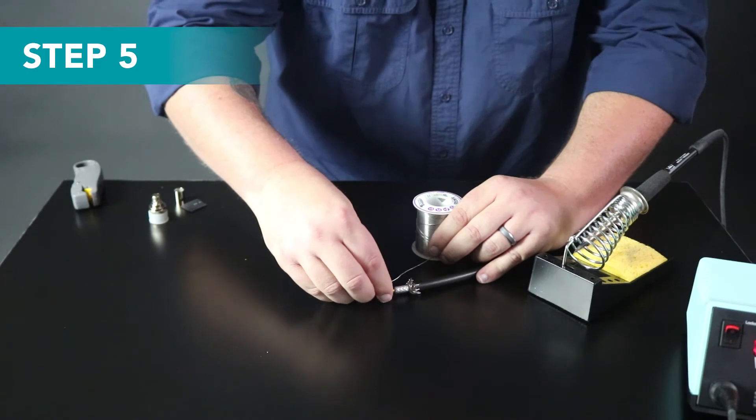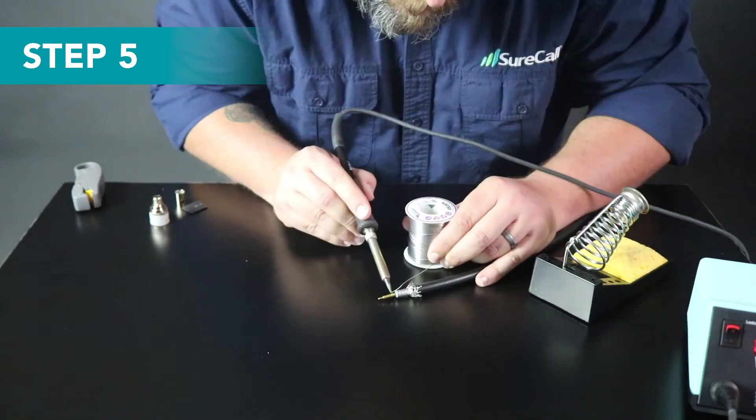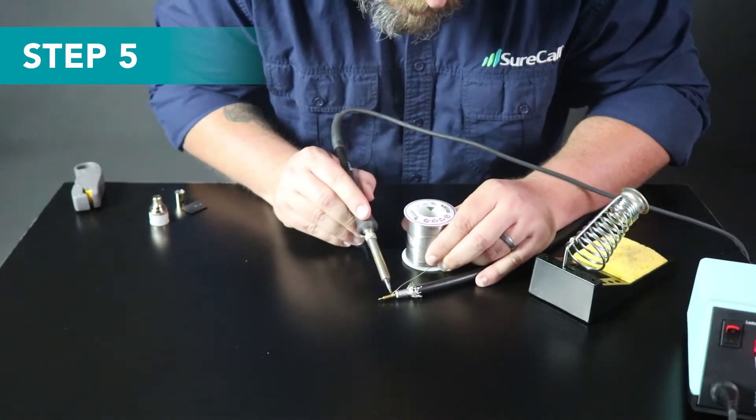Step five, before placing your connector on the cable, make sure the exposed core is 3.9 millimeters long. The stripping tool should have made it this length, but it never hurts to double check. Take the center pin and solder it to the end of the cable. Once again, soldering is not required, but it is strongly suggested.